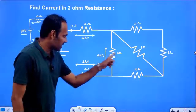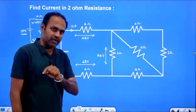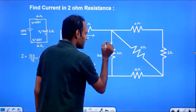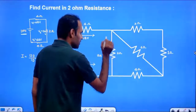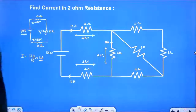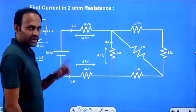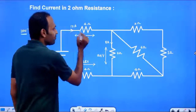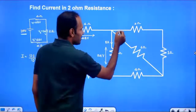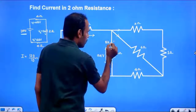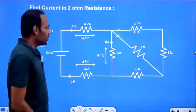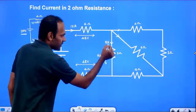We have voltage and resistance, so we can find current. I equals V by R: 24 divided by 3 gives 8A. Now, the 12A main current arrives at this junction and has to divide into parts. One branch takes 8A, so the remaining 12 minus 8 equals 4A has to get divided.